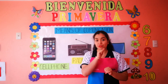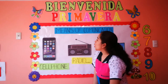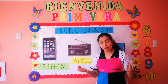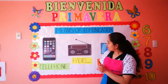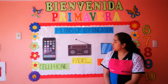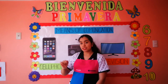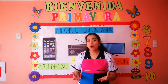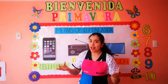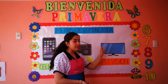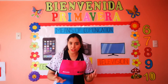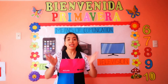Ahora vamos a repasar. Voy a preguntarles, estén atentos. ¿Cómo se dice radio en inglés? Se dice radio. ¿Cómo se dice celular en inglés? Se dice cell phone. Very good, se dice cell phone. Muy bien, se dice computer.